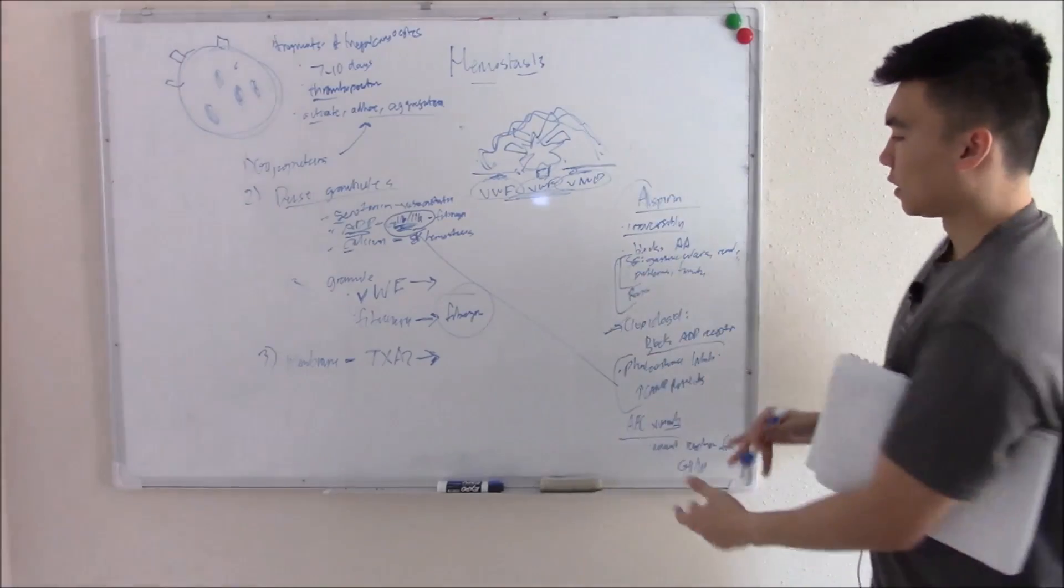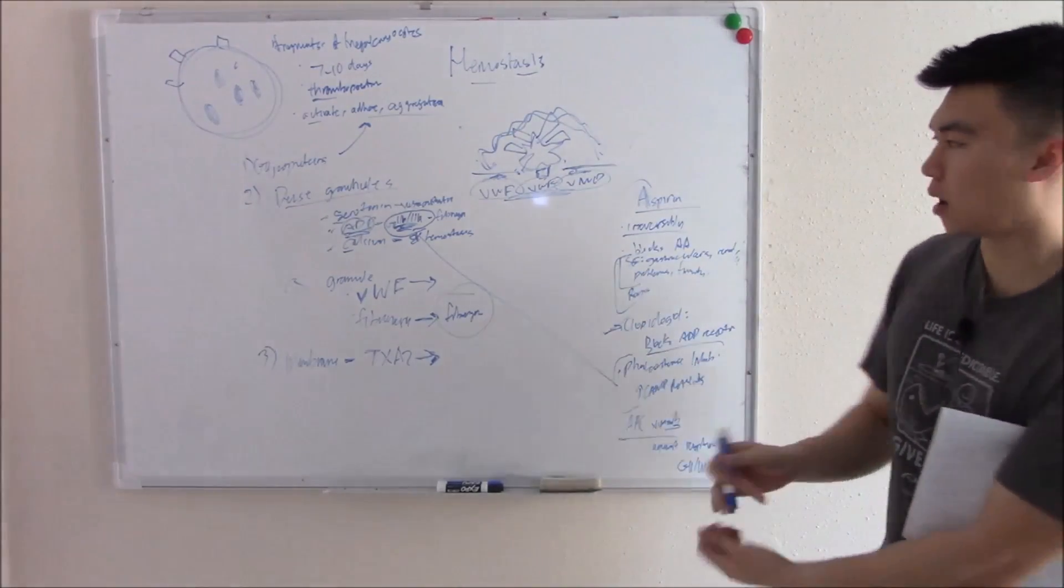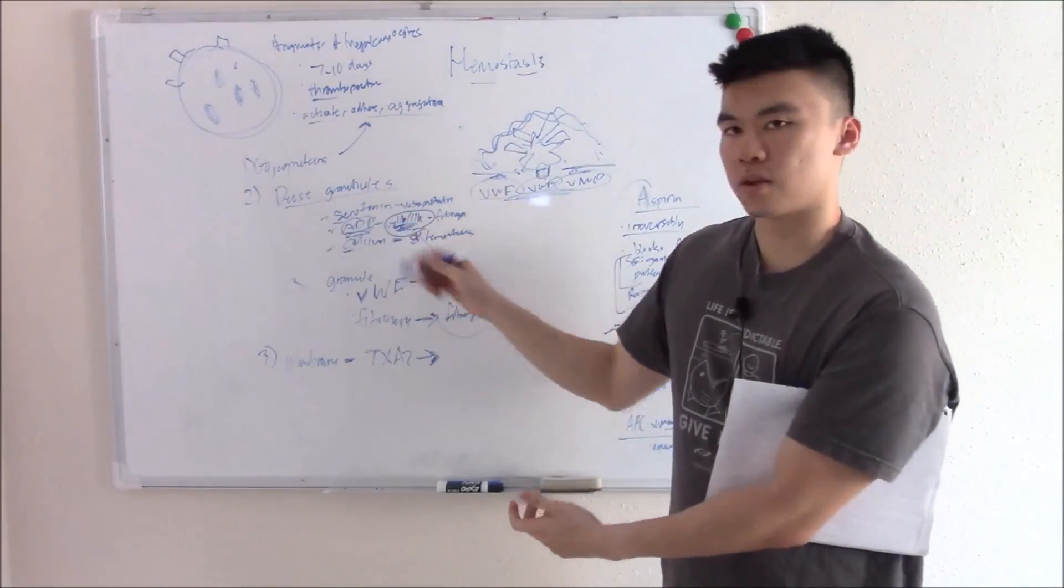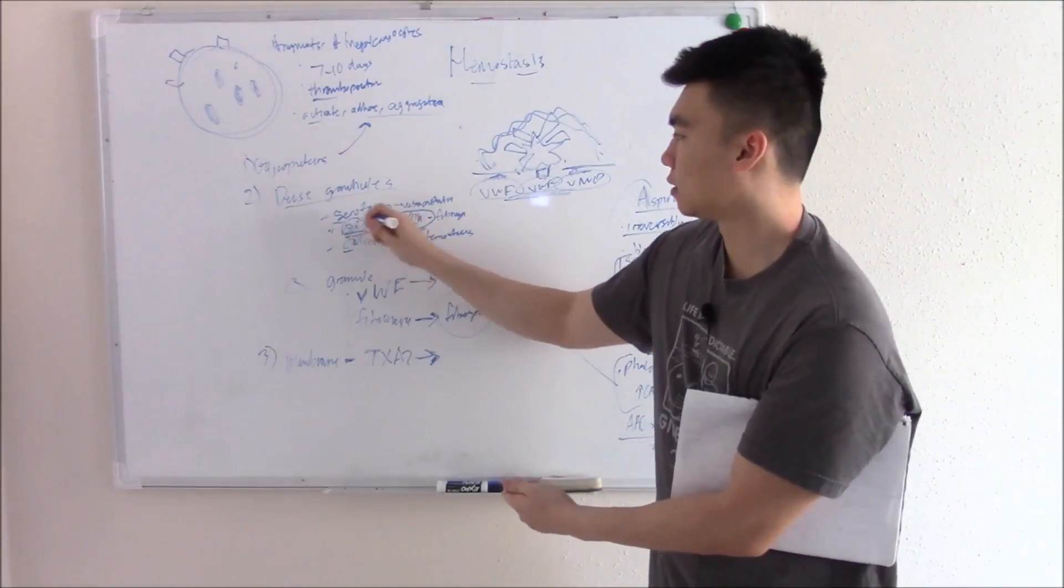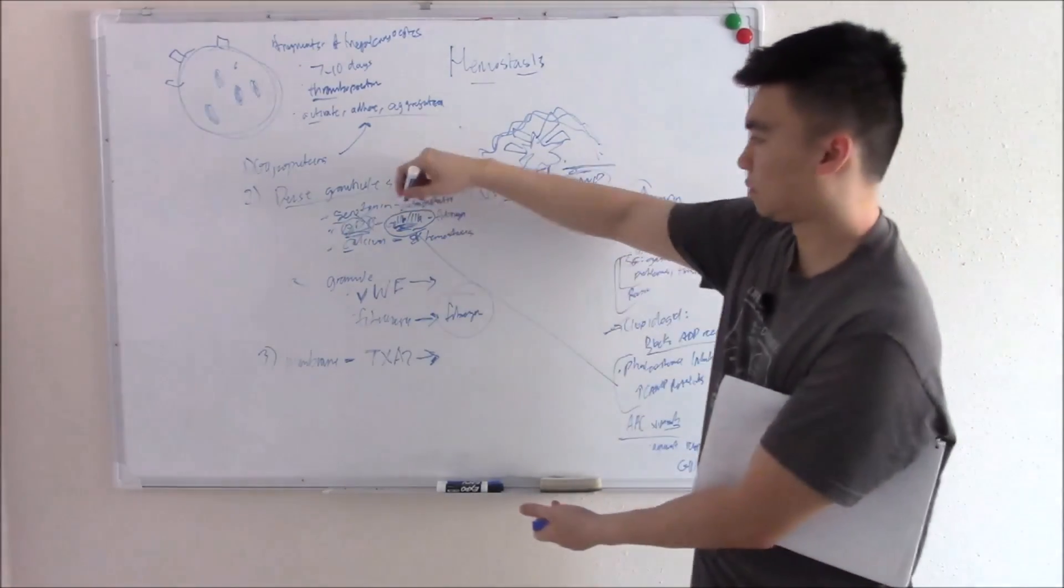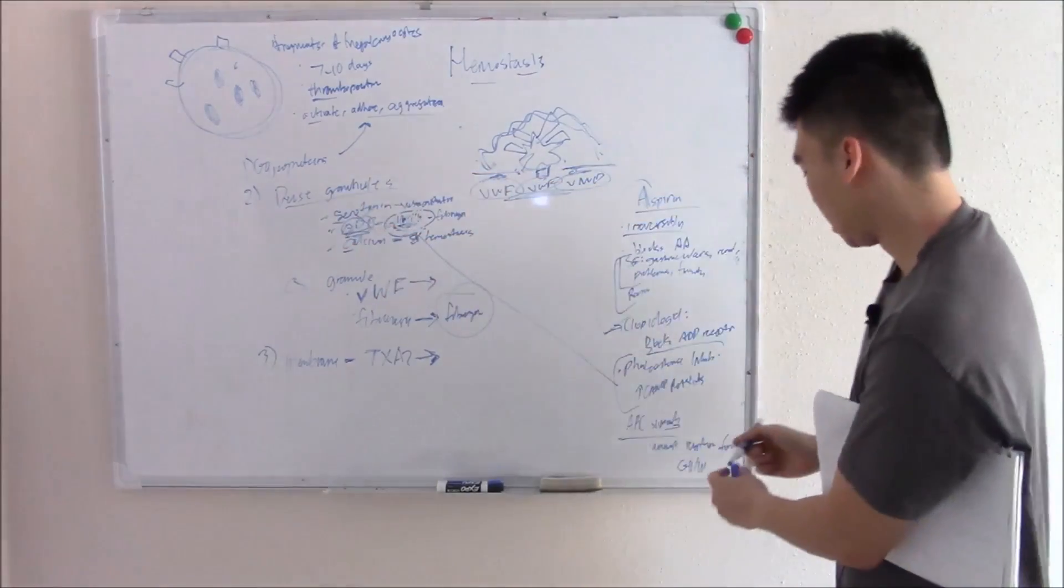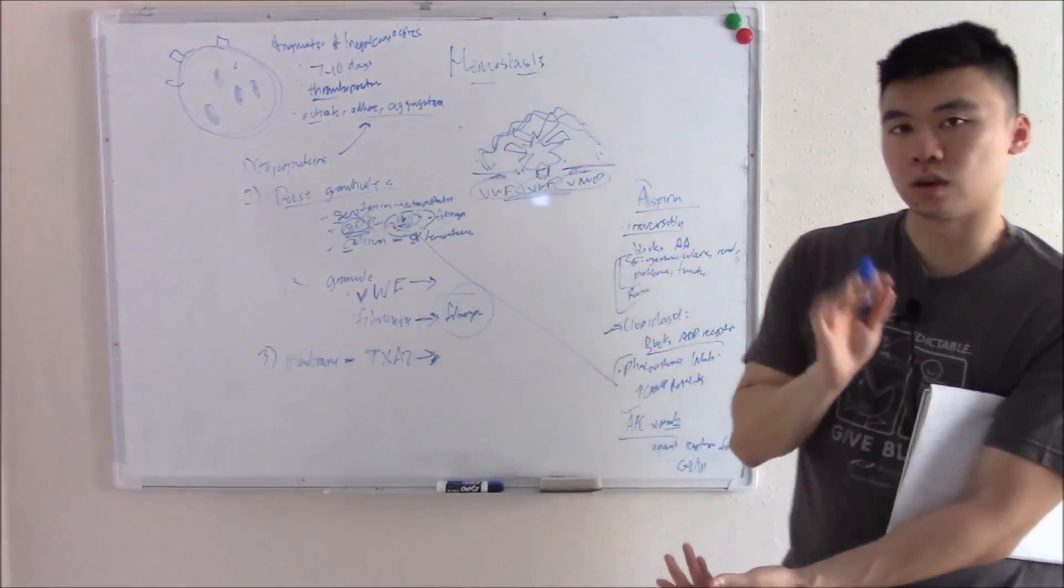This is very different from clopidogrel. Clopidogrel indirectly blocks glycoprotein 2b and 3a by blocking ADP. Abciximab directly blocks glycoprotein 2b and 3a, it has nothing to do with ADP. That's your difference, you have to know that well, it's commonly asked.